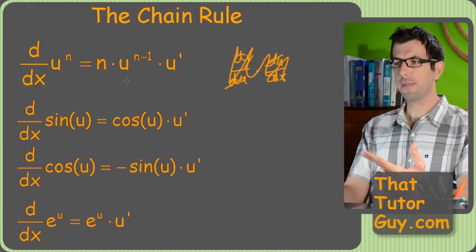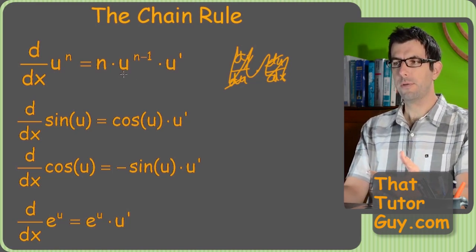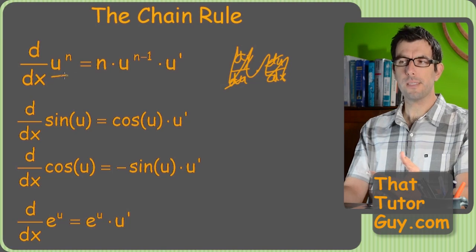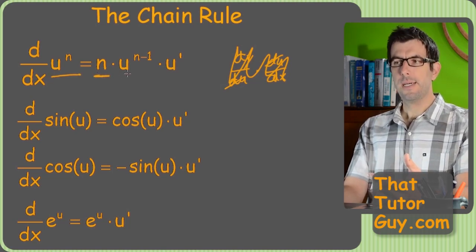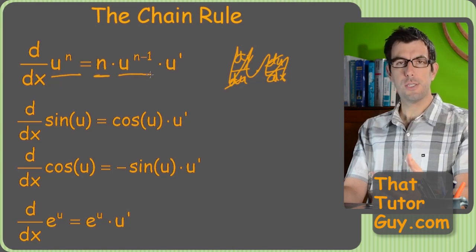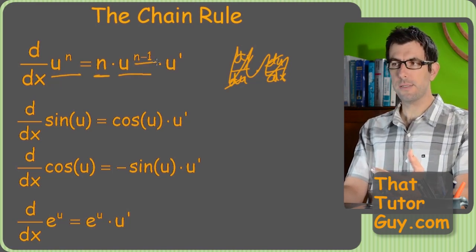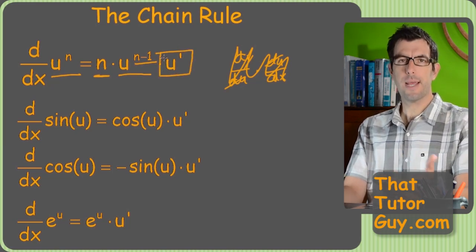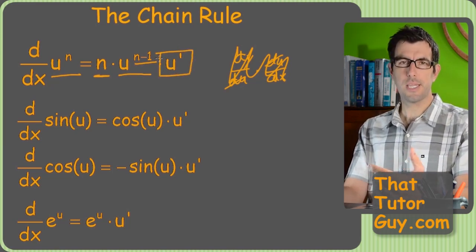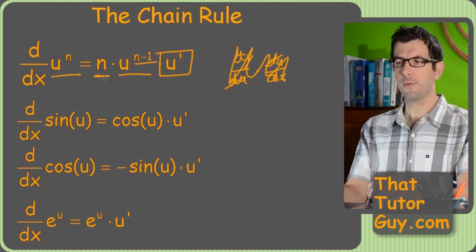All right so here's a bunch of formulas and they should look familiar to you. So we've got you know the old power rule. If we had something to the power of n, the derivative is the old exponent times the same thing to the new power which is one less, so take away one. But then this is the new guy right, this u prime on the end, where'd that come from? Well that's what's going to allow us to take the derivative of stuff other than x to a power.